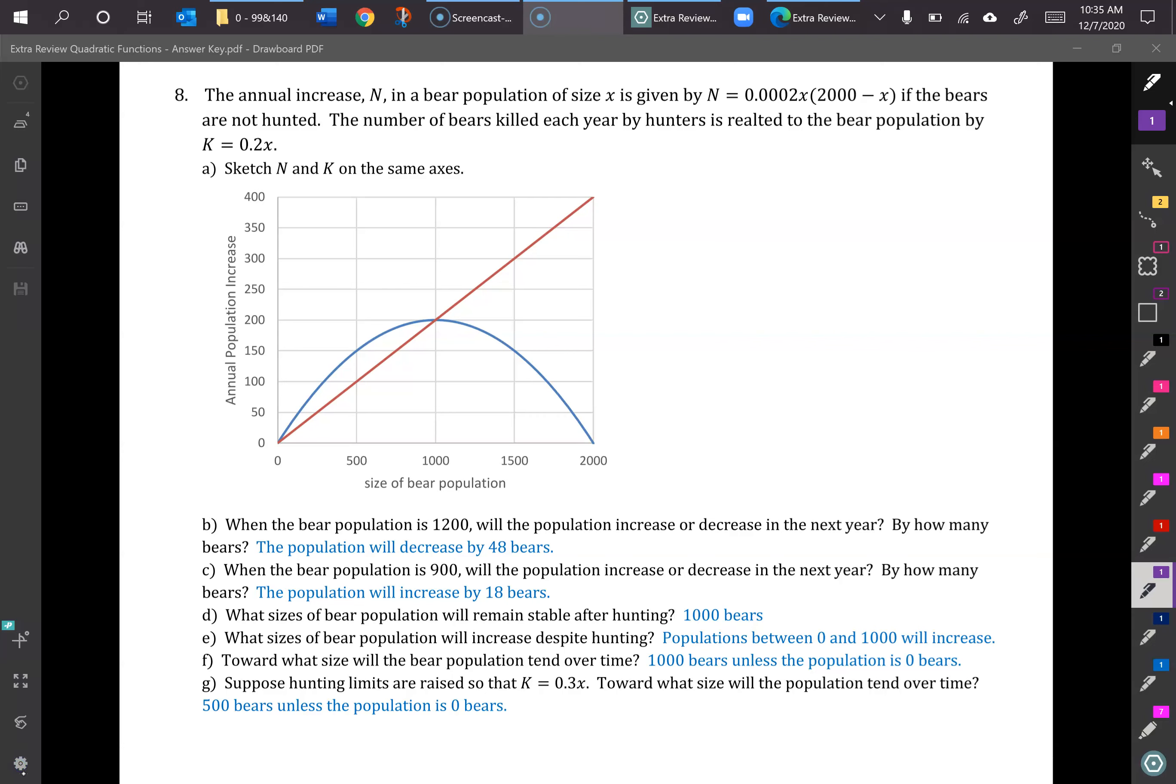In this video we're going to look at number 8. The annual increase N in a bear population of size x is given by N equals 0.0002x times quantity 2000 minus x if the bears are not hunted.